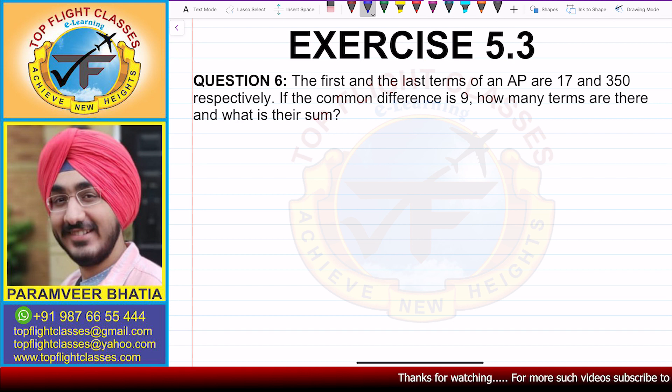Now question number 6 says: the first and the last terms of an AP are 17 and 350 respectively. If the common difference is 9, how many terms are there and what is their sum?